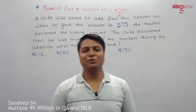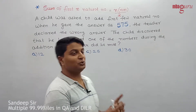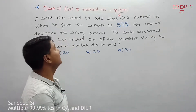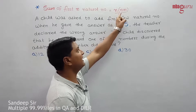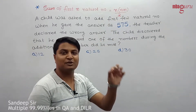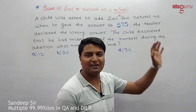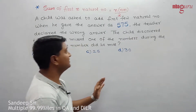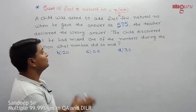Hi guys, welcome to Care Part Videos. We are starting a new concept: sum of first n natural numbers. The formula for sum of first n natural numbers is n into (n+1) divided by 2. That is, 1+2+3+4+5 up to n equals n(n+1)/2.